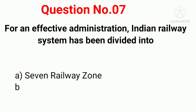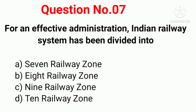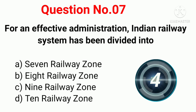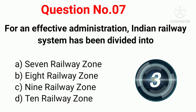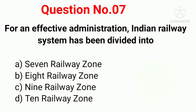Q7. For effective administration, the Indian Railway System has been divided into: Option A: 7 Railway Zones. Option B: 8 Railway Zones. Option C: 9 Railway Zones. Option D: 10 Railway Zones. Correct answer: Option C, 9 Railway Zones.